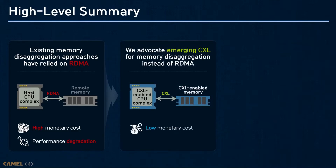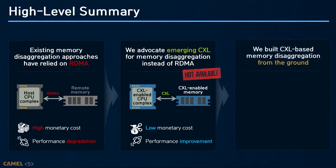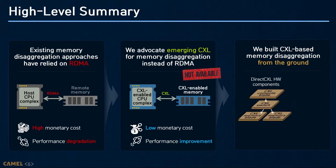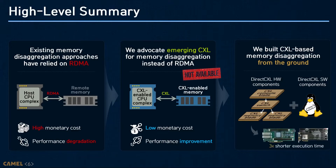CXL can reduce monetary cost for memory disaggregation and minimize performance degradation. However, CXL-enabled systems are not available for now. In this work, we designed CXL-based memory disaggregation called DirectCXL. DirectCXL implements a CXL-enabled host, CXL memory device, and CXL switch. We also modified the Linux kernel to expose CXL-attached memory to user-level applications. Our evaluation using a real hardware prototype shows three times better performance than RDMA-based memory disaggregation.